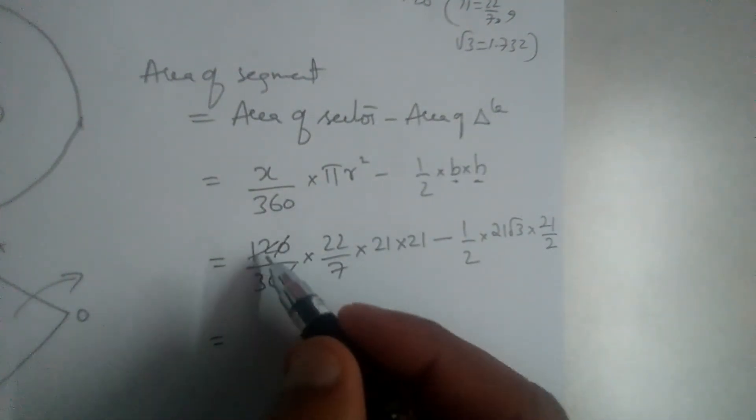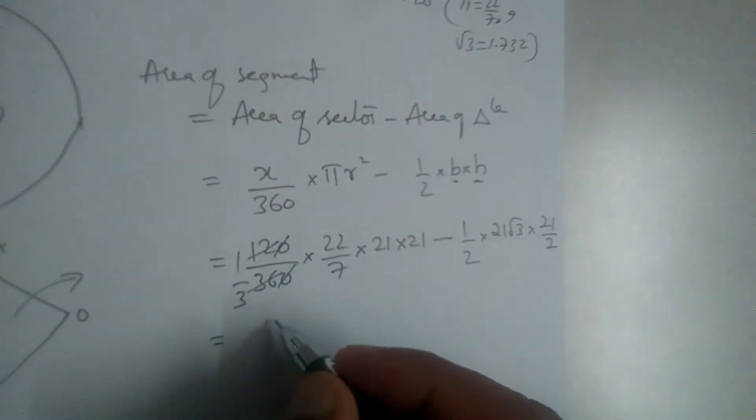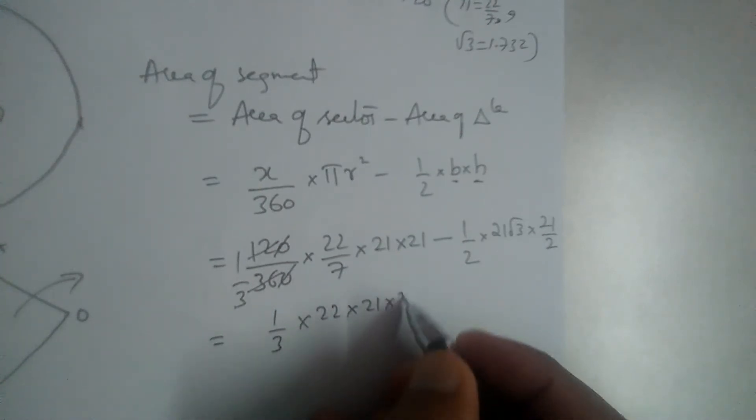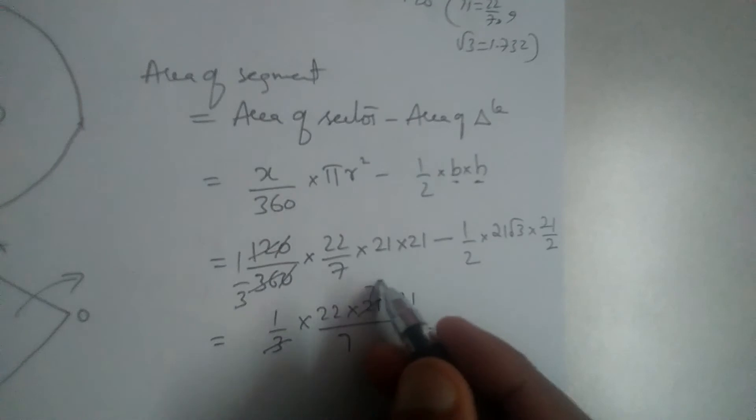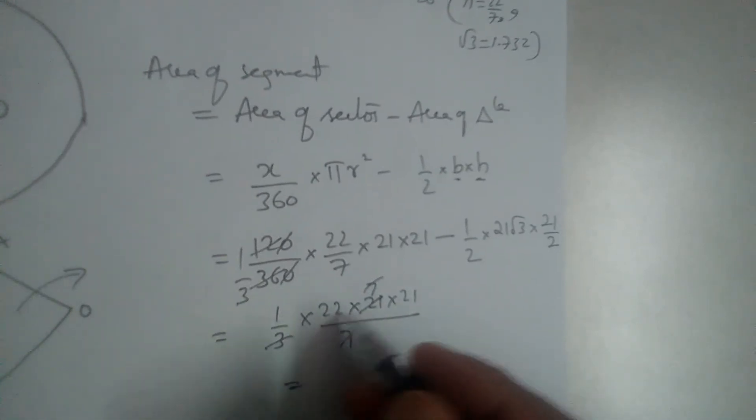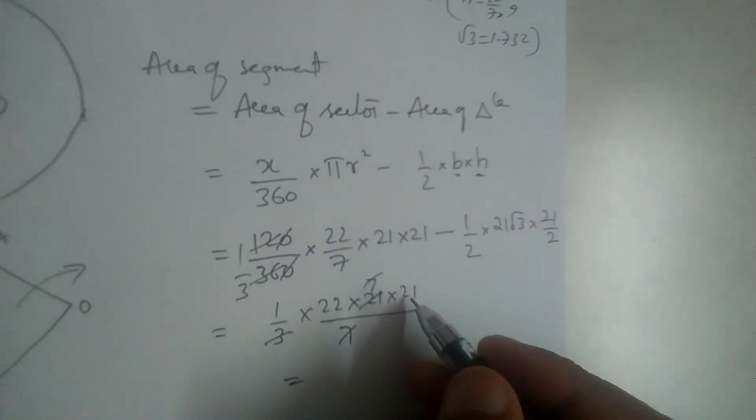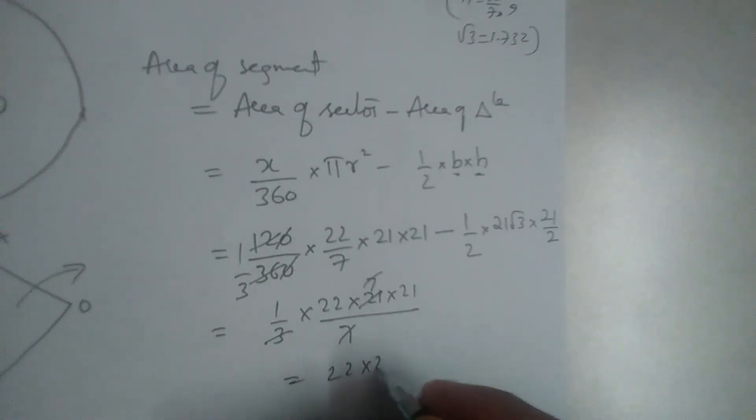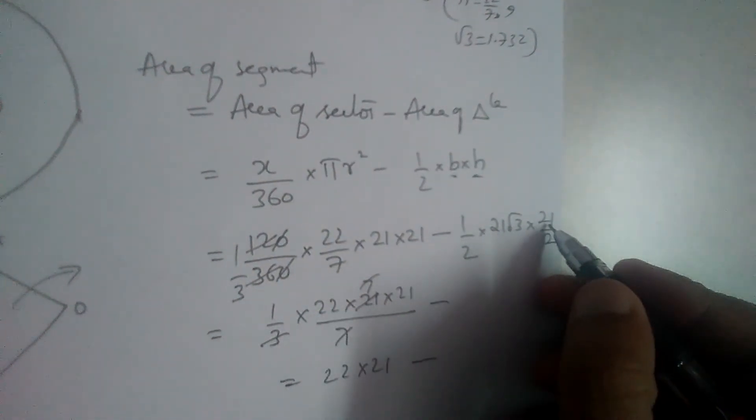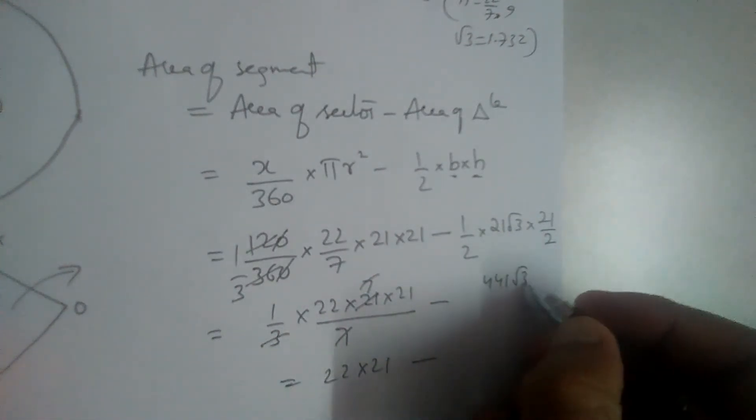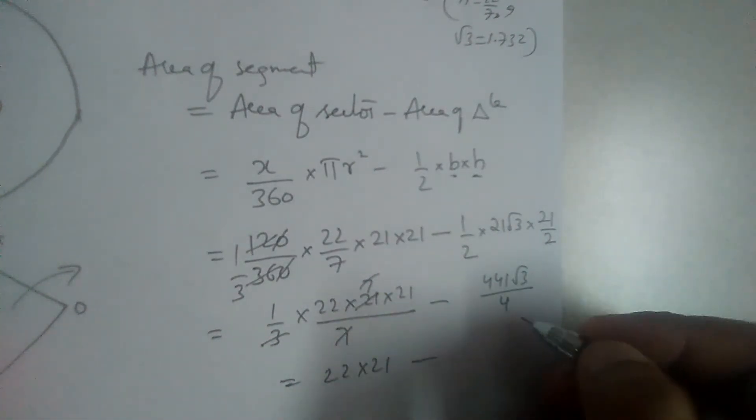Now 1 by 3 into 22 into 21 into 21 divided by 7, so 22 into 21 and minus, and here 21, 21 root 3 divided by 2.